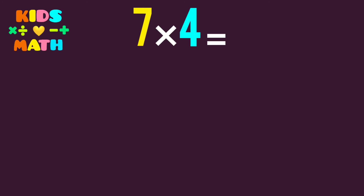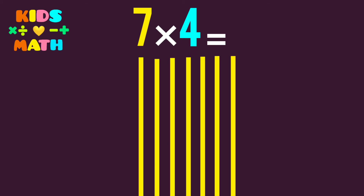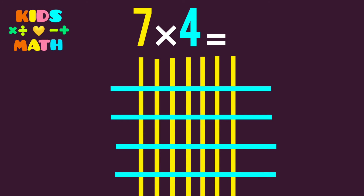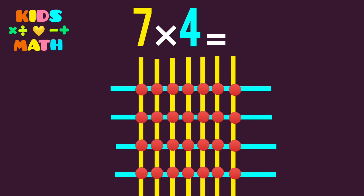7 times 4. The first number is 7, so we derive 7 lines. The second number is 4, so we derive 4 lines. Then we count the common points.